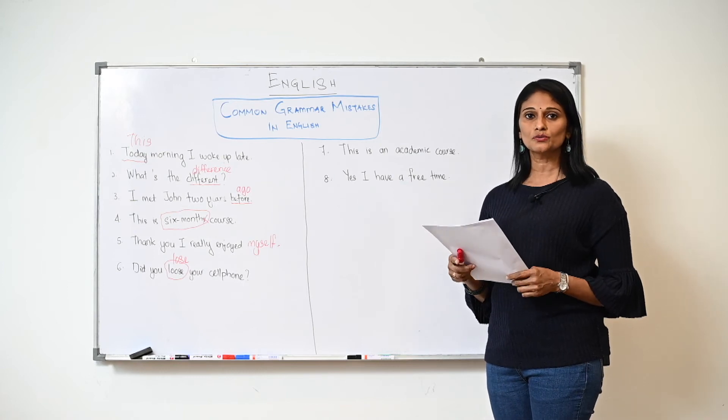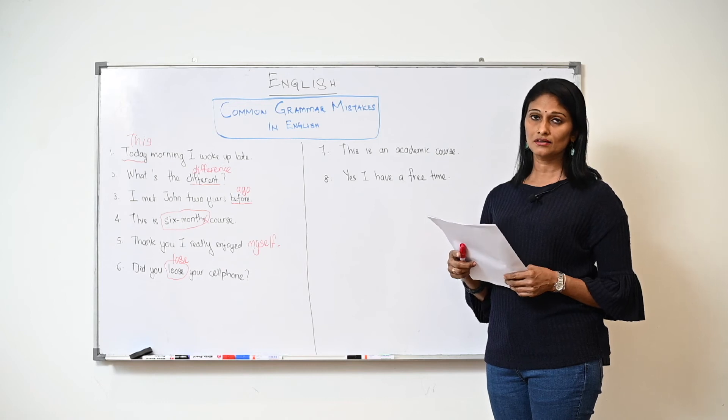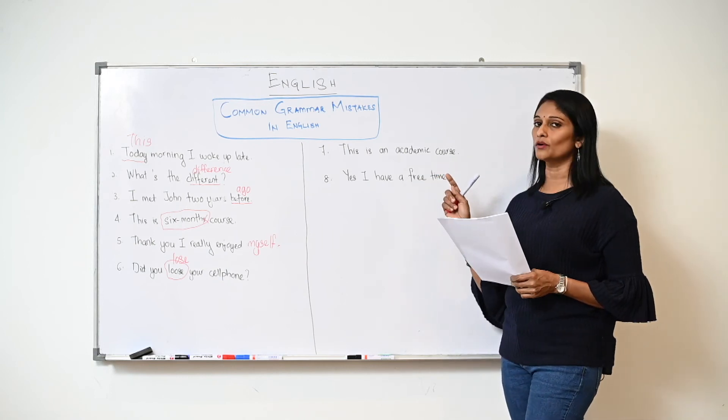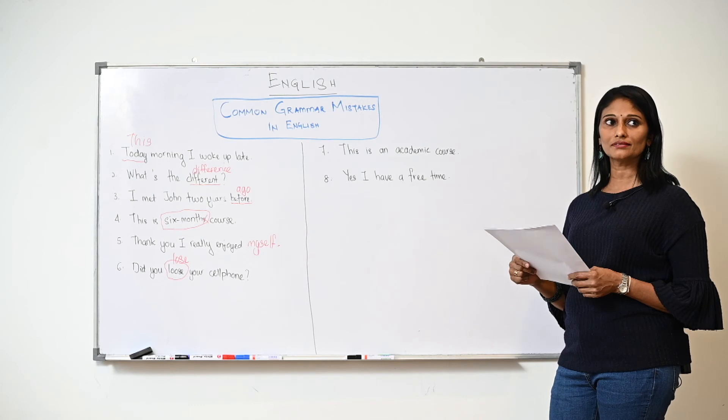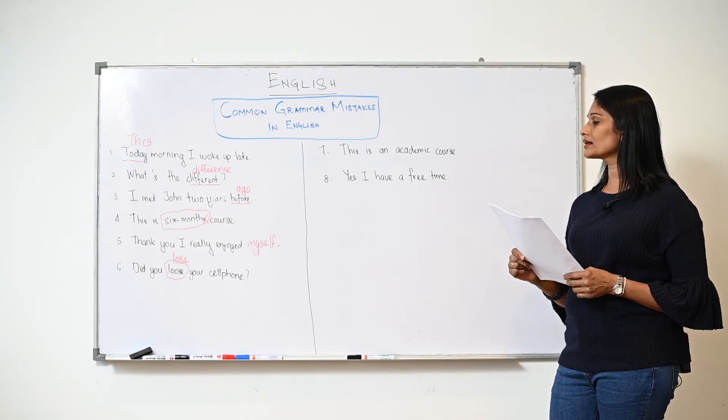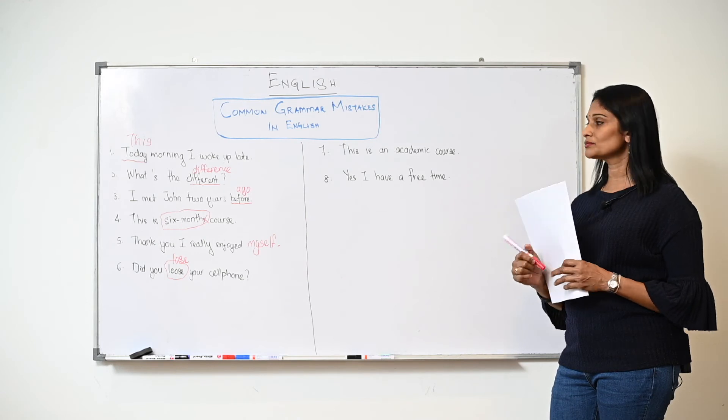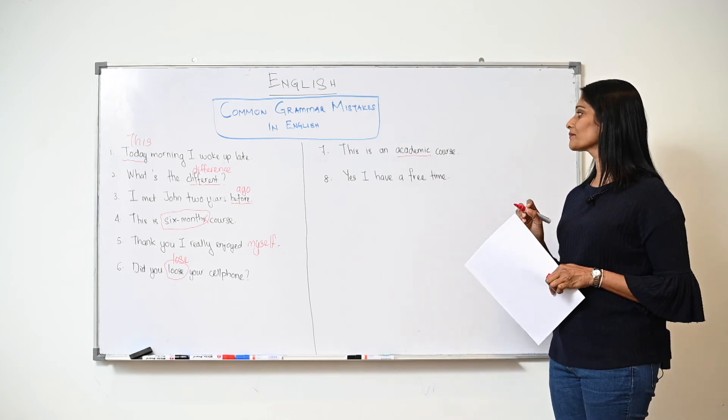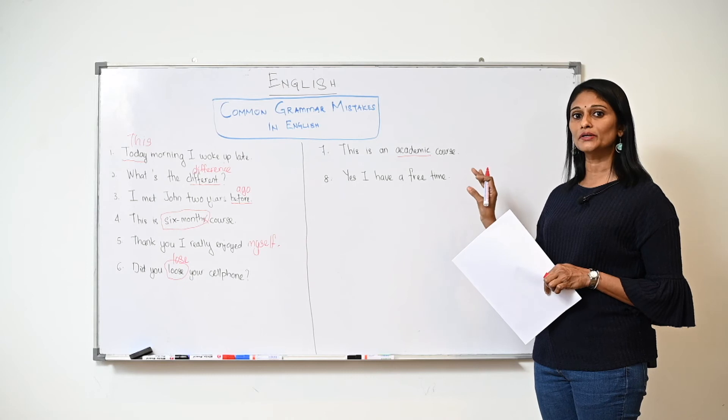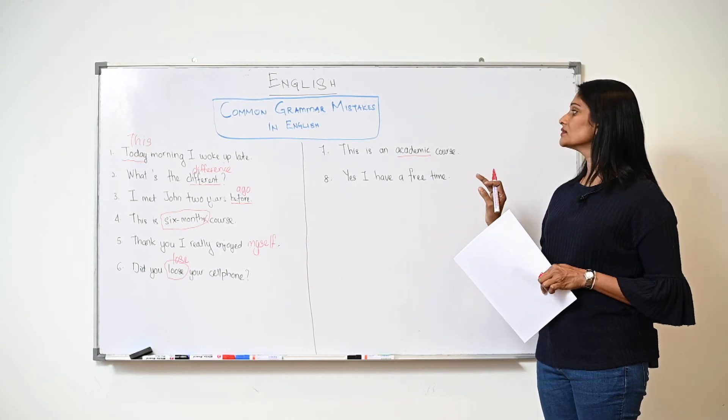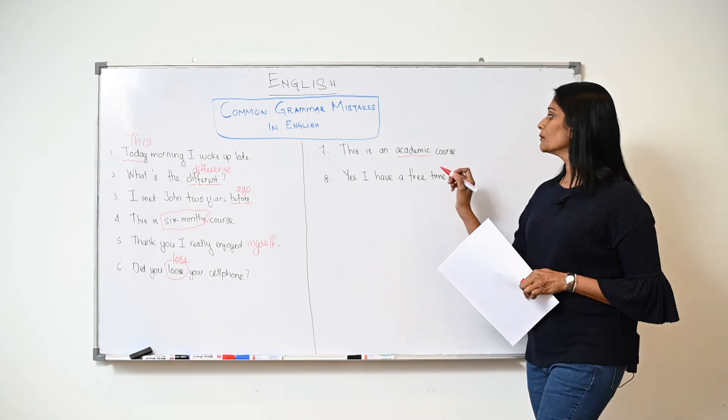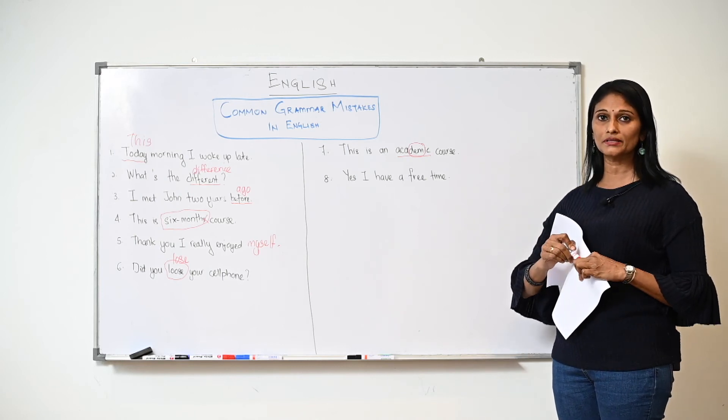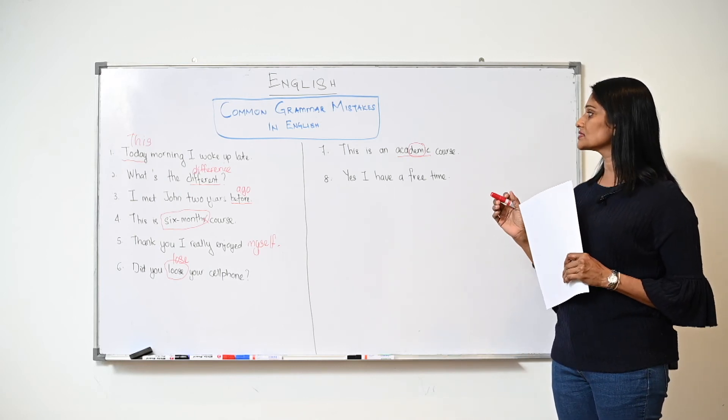Now move on. Number seven: "This is an academic course." Nothing wrong there, right? We say "this is an academic course." What's wrong with this word "academic"? How do we say it? Most of us always say "academic course," but no, you have to stress the second syllable here. This is an "academic" course - the 'demic' there, you got to stress a little. You say "this is an academic course."